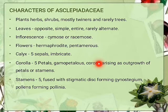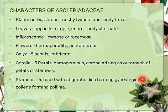The corona is an androecial-derived structure found in Asclepiadaceae flowers, of variable form, color, and dimension, which is incorporated in the gynostegium. The gynostegium is a complex structure formed by the fusion of stamen and stigma, collectively known as the gynostegium. Stamens are also present in five numbers and form pollen.